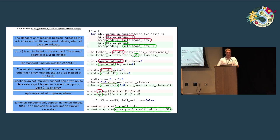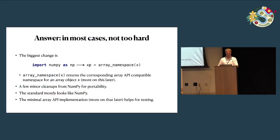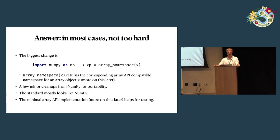For example, the code was using std as an array method, but in the array API we use functions instead of methods, so that needed to be changed. The big answer is: it's actually not too bad. The biggest change is changing imports — instead of import numpy as np, you use XP = array_namespace(x), where this array_namespace function returns the appropriate array API-compliant namespace for your input object x. Then just a few cleanups for portability. The standard mostly looks like NumPy already, so it's not too different. There's also a minimal implementation that really helps with testing and making sure your code is actually using portable operations.